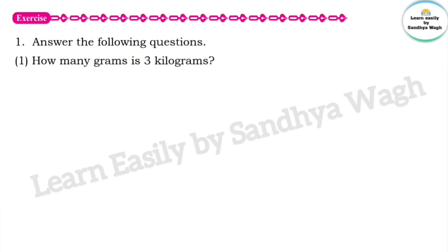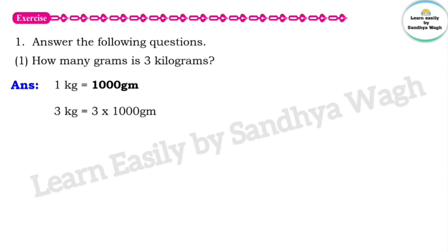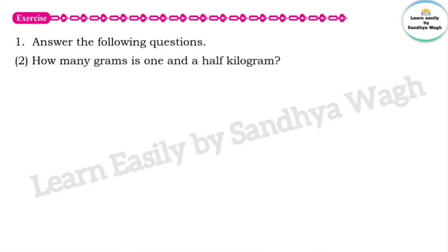Now let us solve our exercise. Question 1: Answer the following questions. How many grams is 3 kilograms? You know that 1 kilogram is equal to 1000 grams, so 3 kg equals 3 multiplied by 1000 grams. The answer is 3000 grams. Next question: How many grams is 1 and a half kilogram?